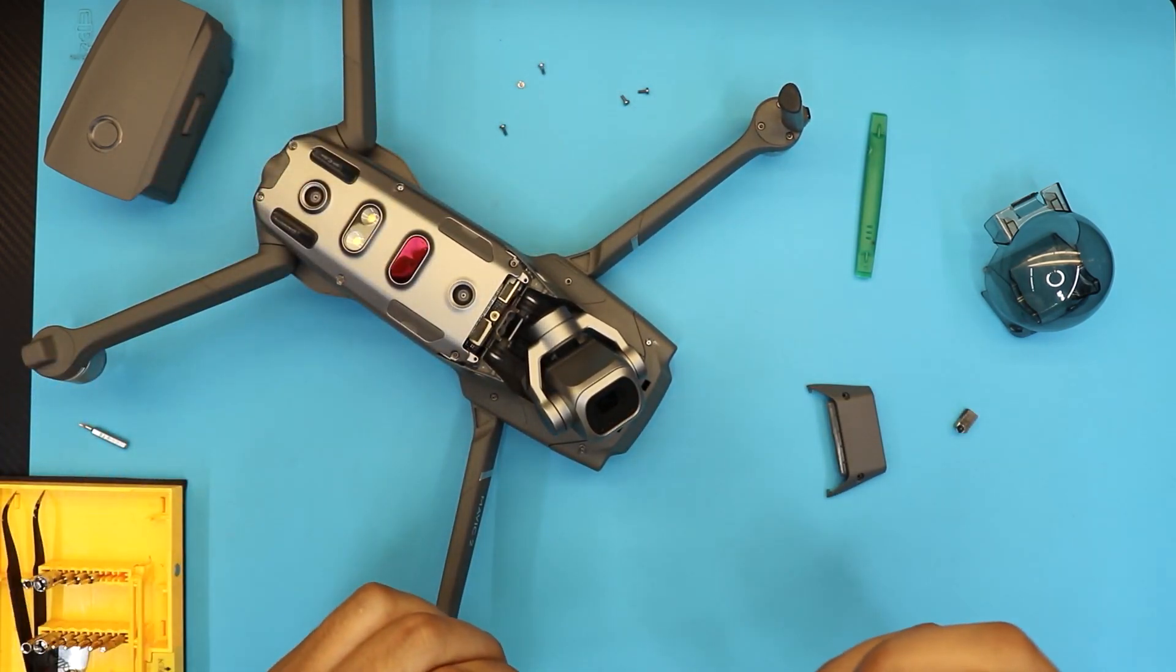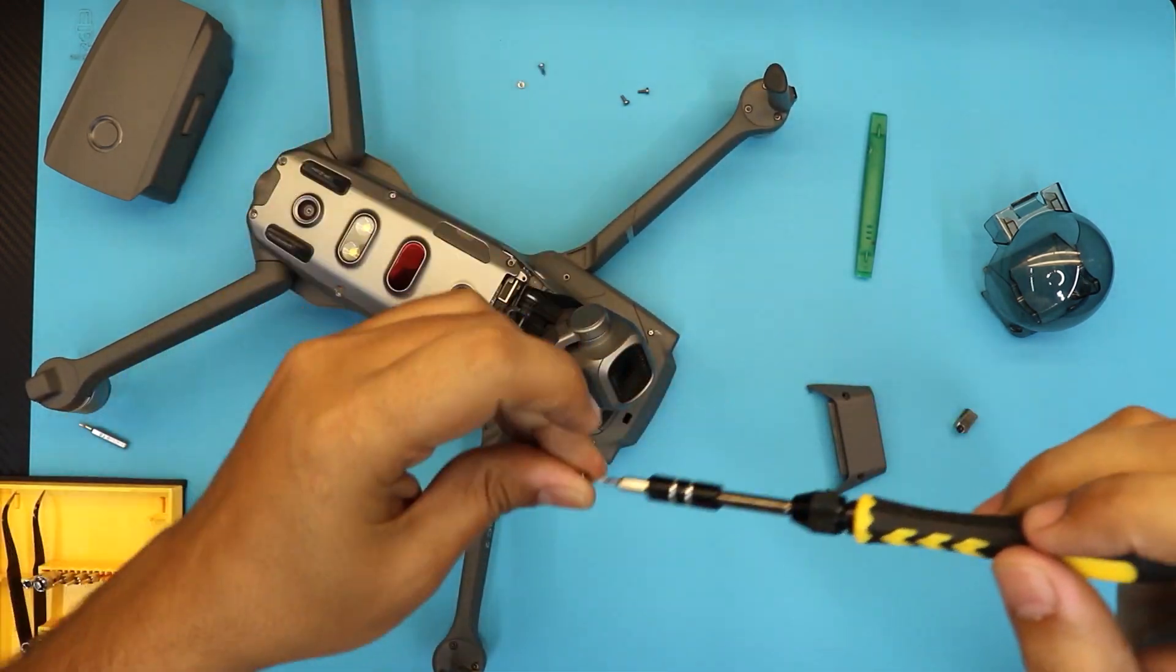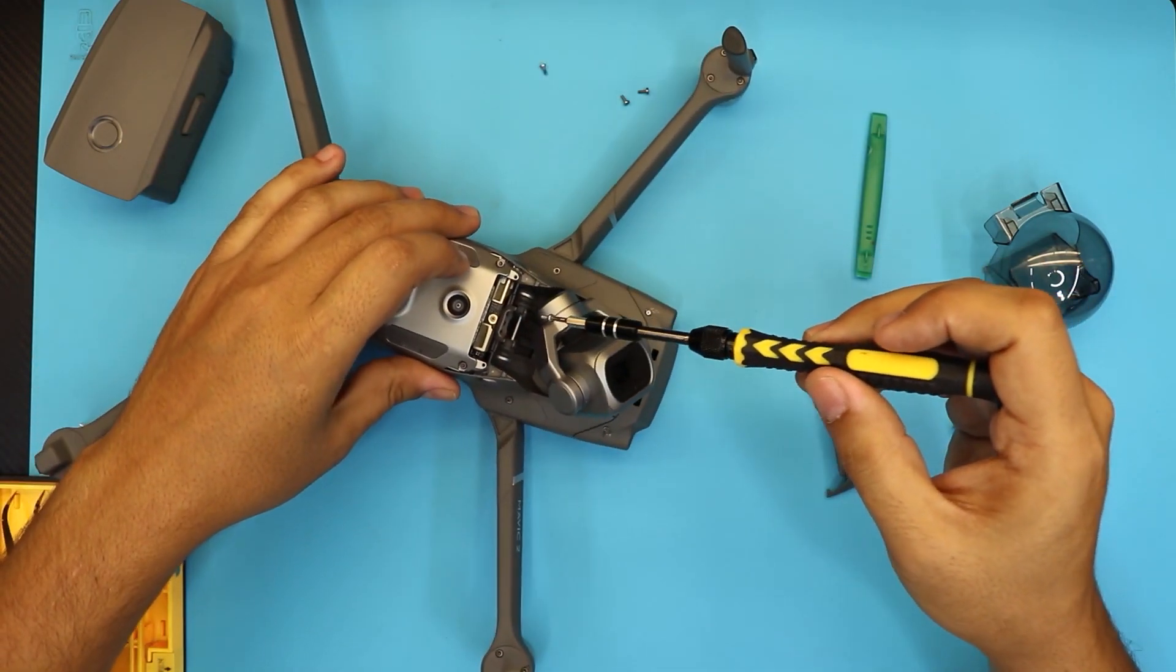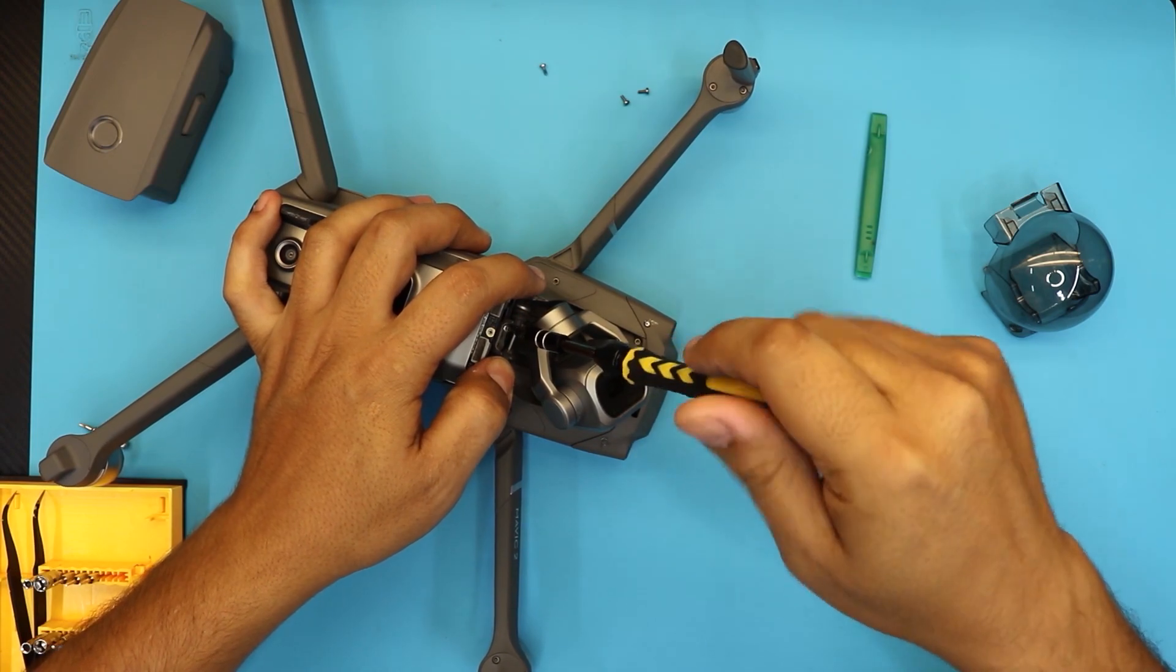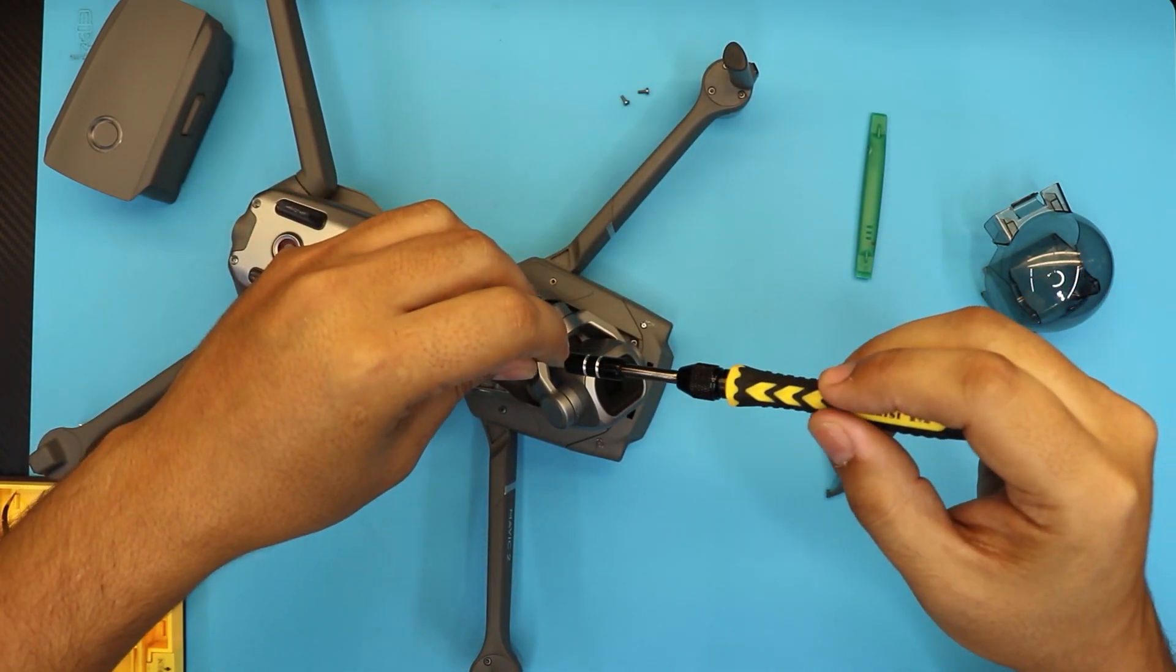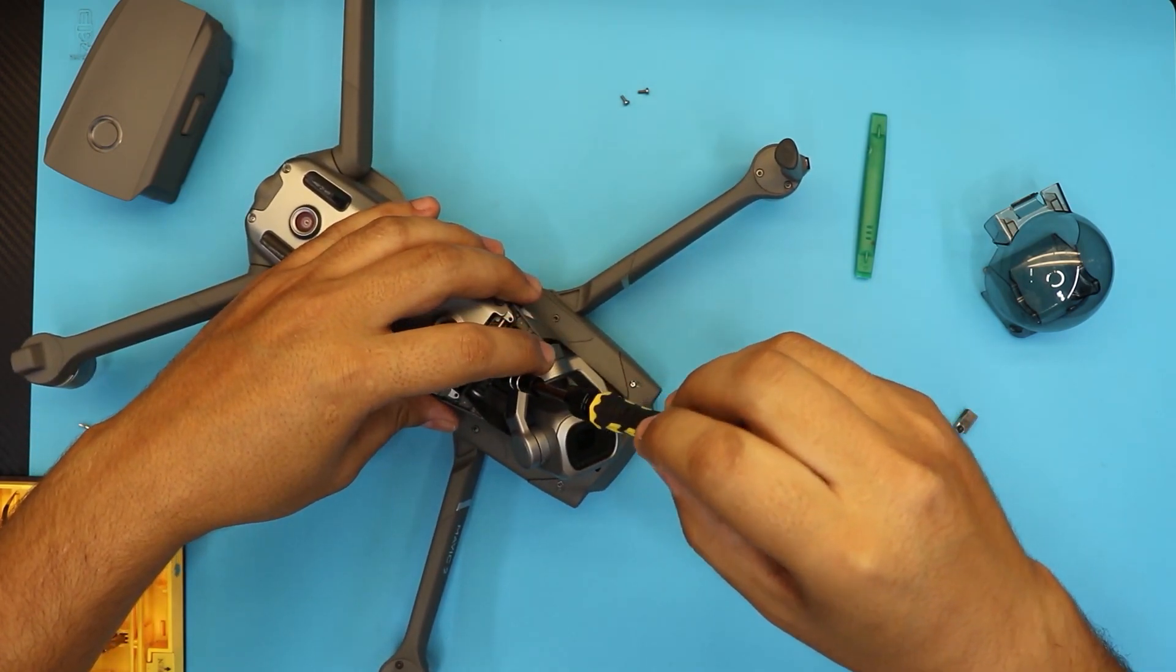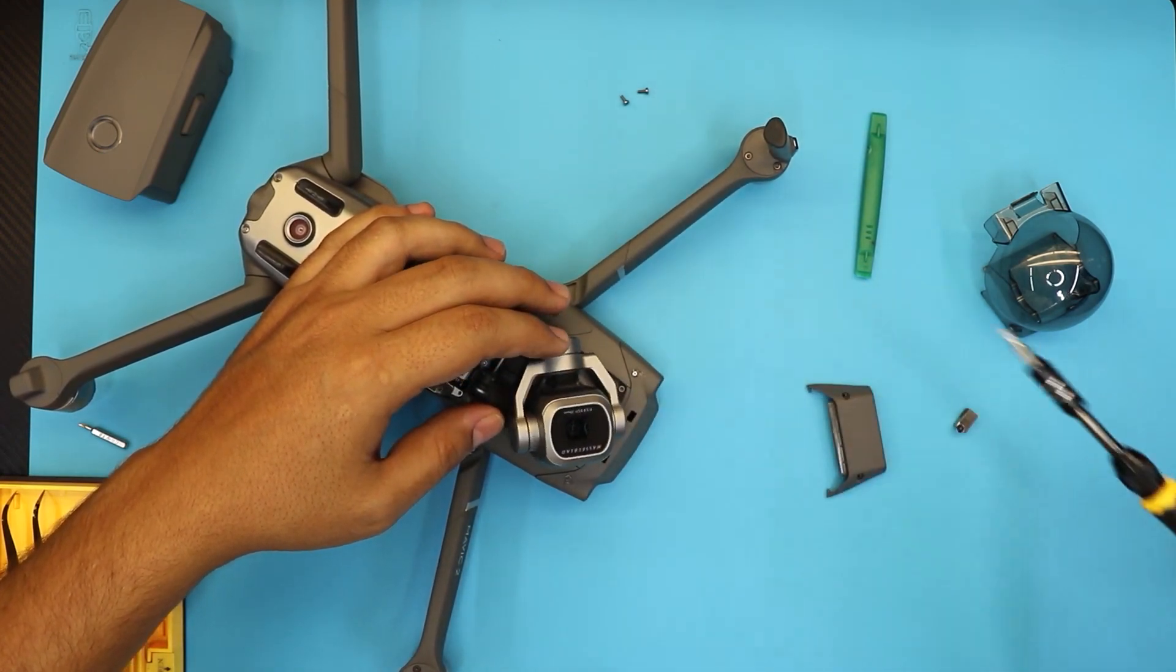And put the same screws back where you took them, and put the two screws right at the bottom base. You do not need to tighten it up too much as there is no vibration or anything. Just a little bit is enough.